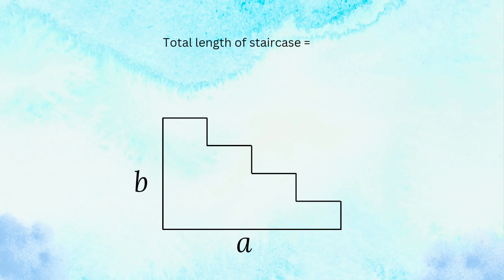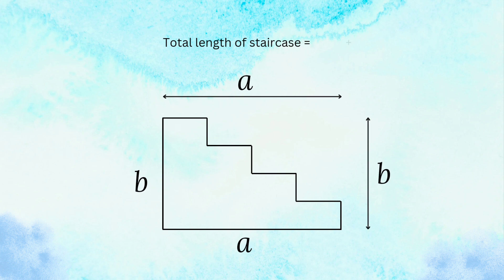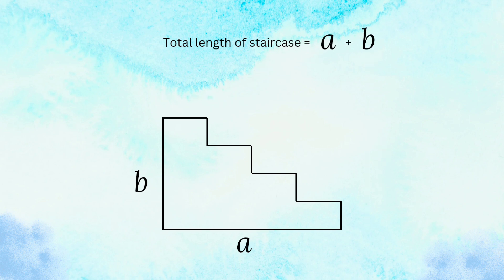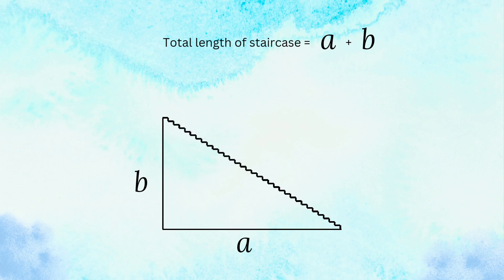Again, if the number of steps is 4, in this case the length of the staircase is the sum of horizontal lines, which is A, and the sum of vertical lines, which is B. Again in this case the total length is A plus B. In fact, even if we change the staircase to have more steps, it will always be true that the total length of the staircase is A plus B.